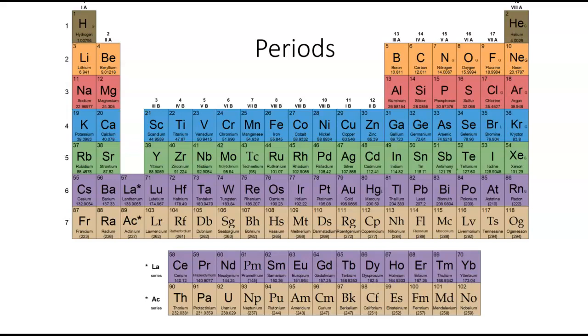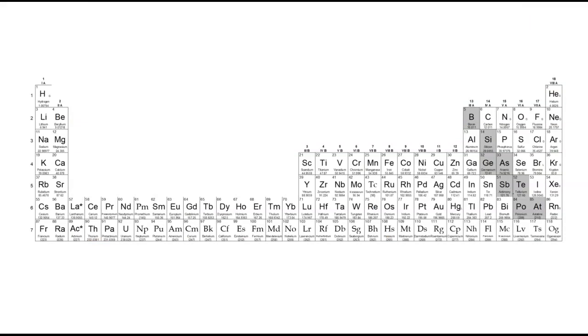If you look towards the bottom of the table, you'll see that the two rows that sit apart from the rest of the table are color coded to match the sixth and seventh periods. You may be asking why that is, why those elements sit out by themselves.